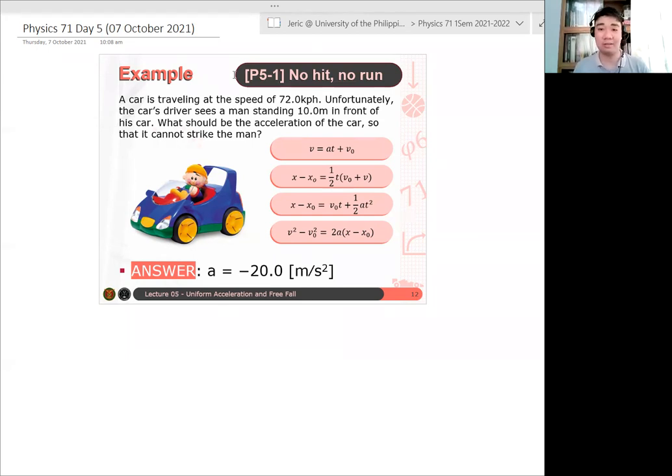Okay, it's better. So let me just pause this. Okay, so let's solve this problem. You have a car traveling at the speed of 72 kph. Unfortunately, he sees a man about 10 meters in front of his car. Gaano kalaking acceleration dapat yung i-press ang kanyang brakes para huminto siya bago siya natamaan yung tao? Okay, so anong tinatanong, what is asked, what we want is